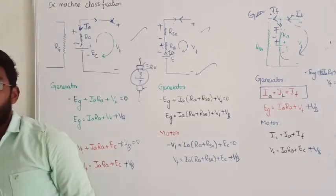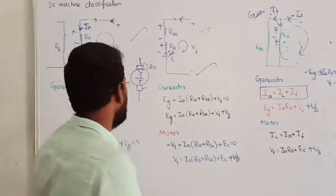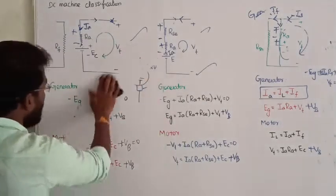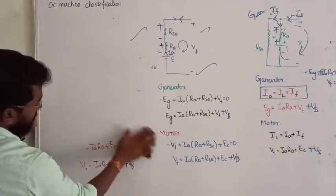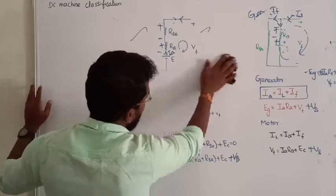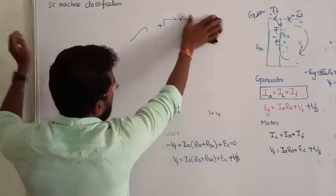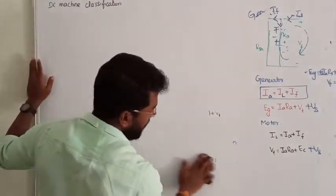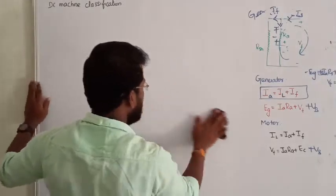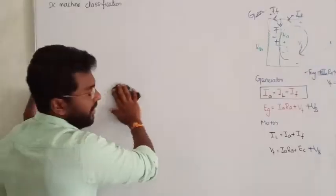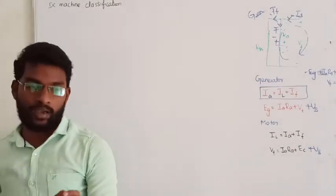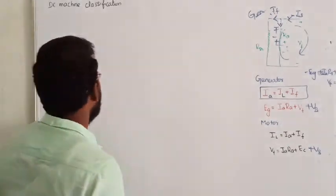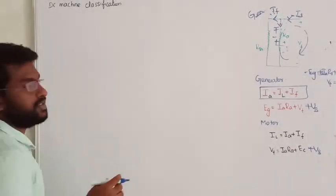We saw one more classification — compound. In case of compound, there are two types: long-shunt and short-shunt. Solving problems in DC machines is very easy — simply apply KCL and KVL to solve the entire machine equations.